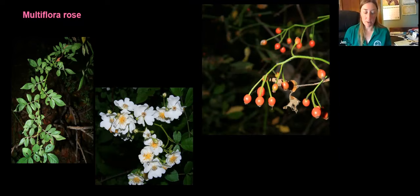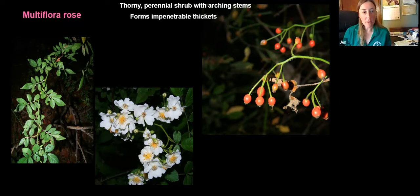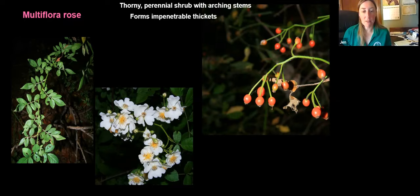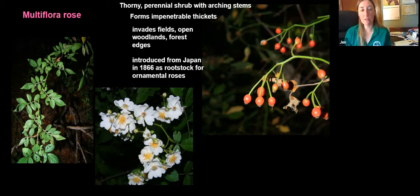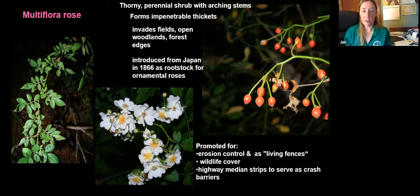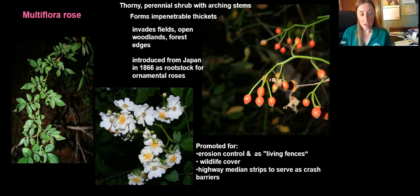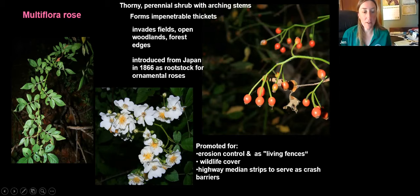Next we have multiflora rose — a thorny perennial shrub with arching stems that can form impenetrable thickets. It has pretty flowers that smell really nice, blooming in May, and later develops red rose hips. This invades fields and a lot of woodland edges. It was introduced from Japan in 1866 as rootstock for ornamental roses and was promoted for erosion control, as living fences, for wildlife cover for pheasant and rabbits, food for songbirds, and even as highway median strips to serve as crash barriers. This species is extremely difficult to remove once established and can very easily take over an area and crowd out native shrubs and understory.